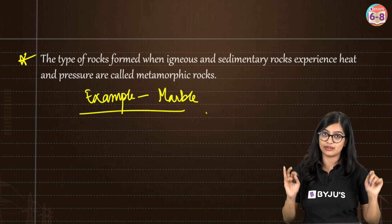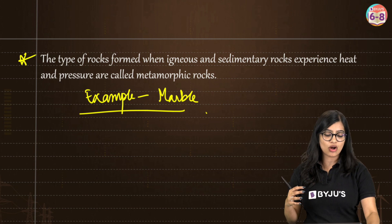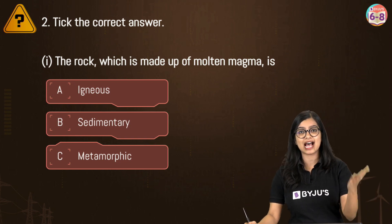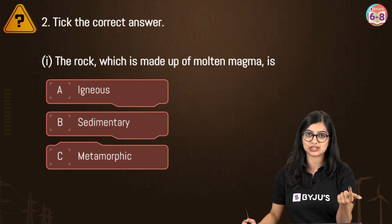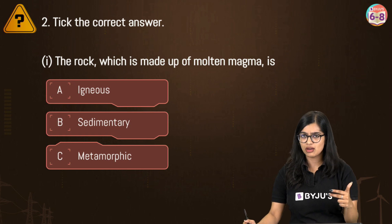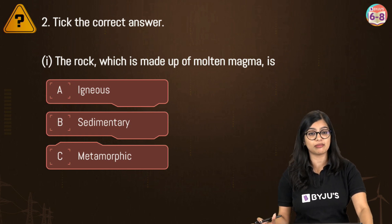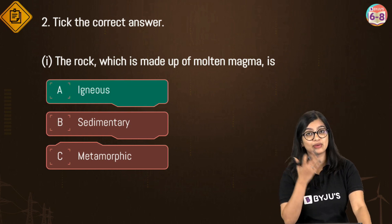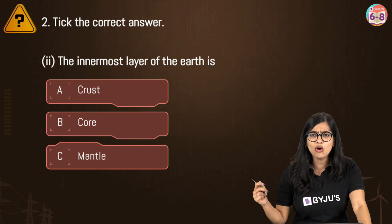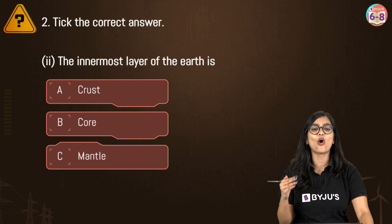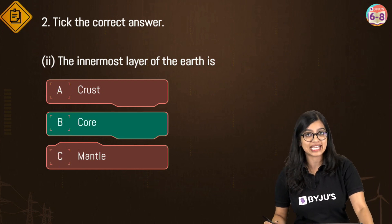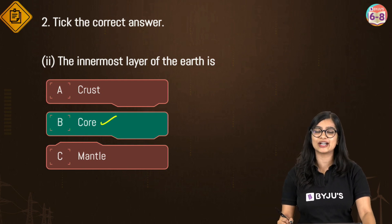Now we move to the 'take the correct answer' questions. Try to answer each yourself before checking. First: the rock made up of molten magma is igneous rock — we also call them primary rocks, so the answer is option A. Second: the innermost layer of the earth — the outermost is the crust, followed by the mantle, and the innermost is the core. Correct answer is option B, core.